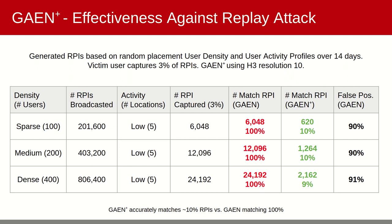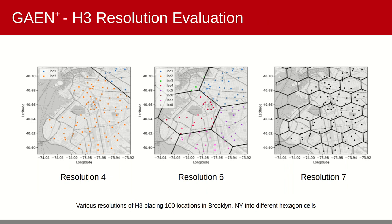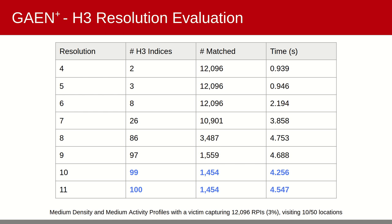Next, we evaluate the impact of the resolution parameter using our non-uniform distribution location dataset. Starting on the left, Brooklyn, New York is almost entirely captured in a single cell at resolution 4. At resolution 6, we see about six cells, and even more at resolution 7. Using a medium user and activity profile that generates over 400,000 RPIs with a victim user capturing 3%, at resolution 4 through 6, GAEN Plus performs like GAEN because the resolution produces relatively large cells. At resolutions 10 and 11, the number of matched RPIs converges to 1,454, along with the number of cells required and time for matching computation. This represents approximately 12% of the roughly 12,000 RPIs captured.